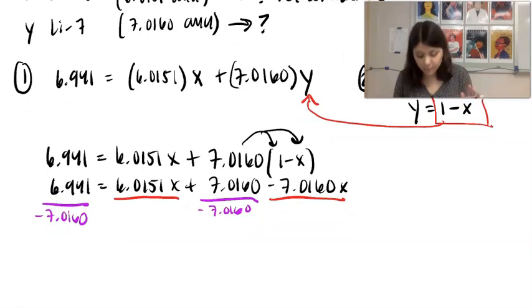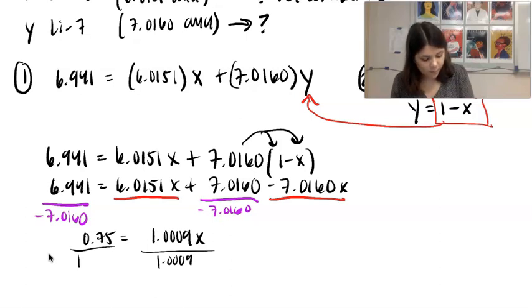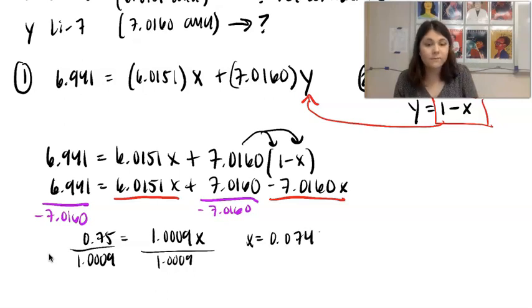So let's see what we have right now. Good morning. Great. So you'll end up getting negative 0.75 and then negative 1.0009 X. Don't forget about those negatives. They'll cancel out. We can get rid of them now. And now I'm going to divide by 1.009. You should get that X 0.0749.